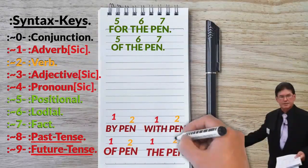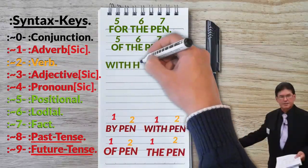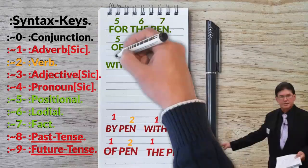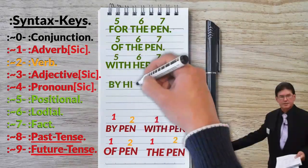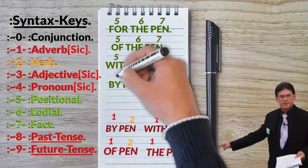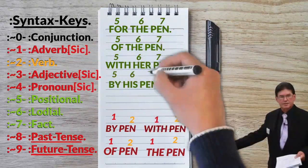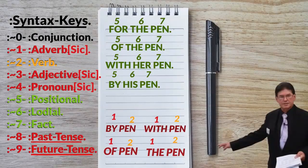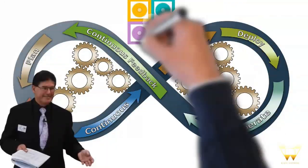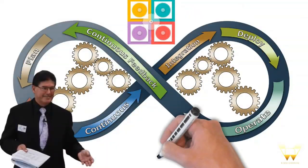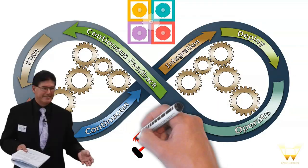Now if you use a prepositional phrase — for this pen, for my pen, for your pen, for his pen, for her pen, with her pen, with his pen — every time I change the preposition or change the article, I change the ownership and I change the operation of the pen. And it goes on and on.